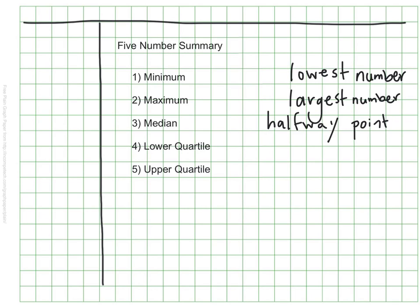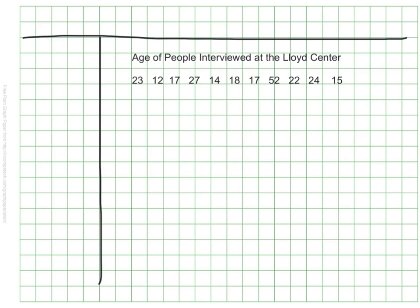I'm going to turn my page and show you a set of data. Let's let this set represent the ages of people who were interviewed while they were shopping at the Lloyd Center. The first thing we need to do is put these numbers in order from least to greatest — that's always our very first step. Go ahead and do that in your journal, then unpause the video when you're ready to check.